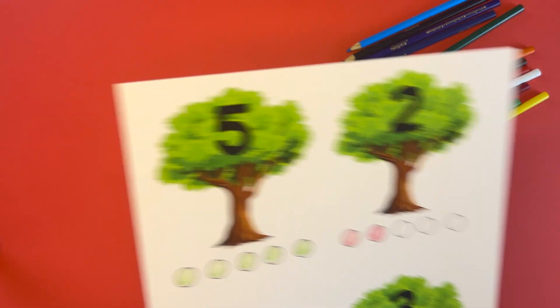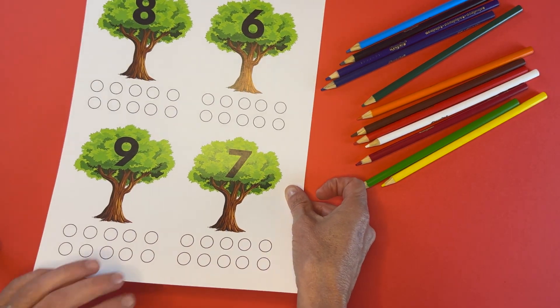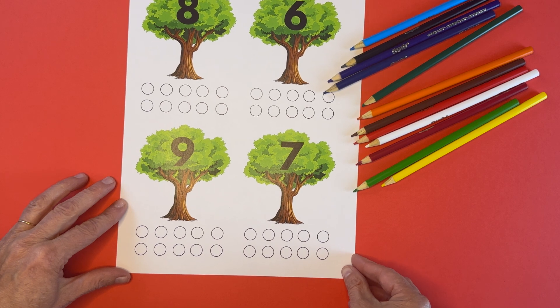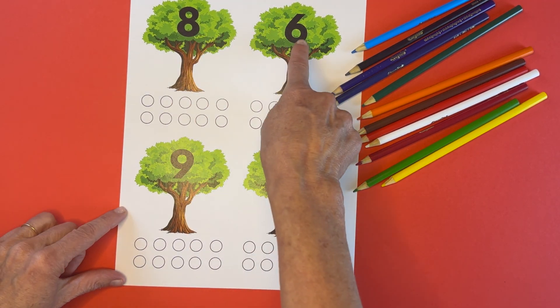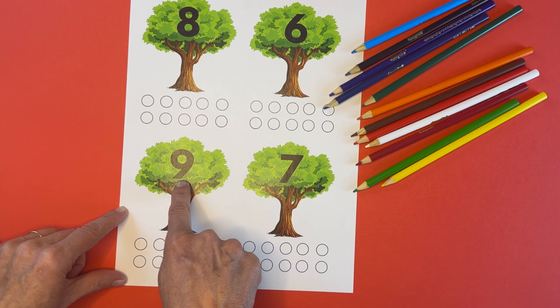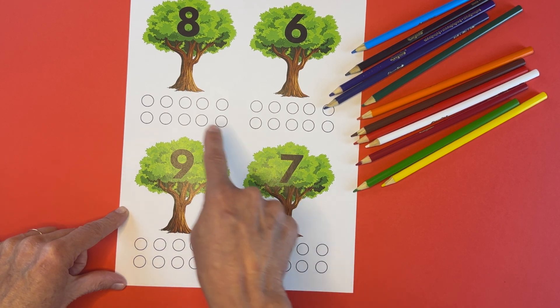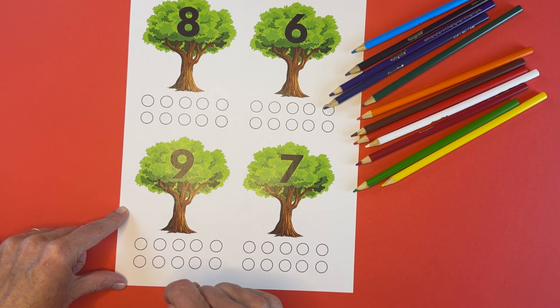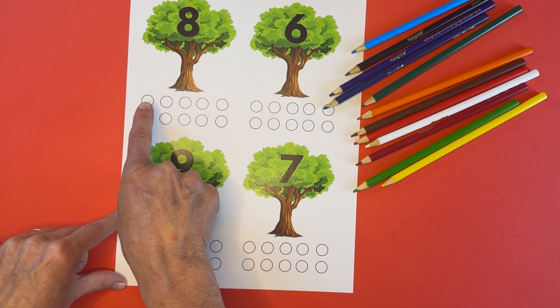Now this is where counting gets fun. We're going to count a little higher on this page. This page has numbers eight, six, nine, and seven with ten circles below each apple tree. Let's count the circles to make sure there's ten.